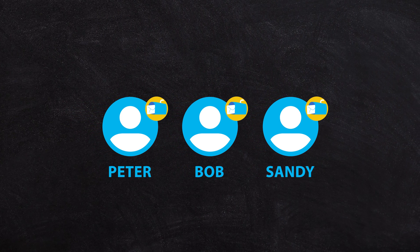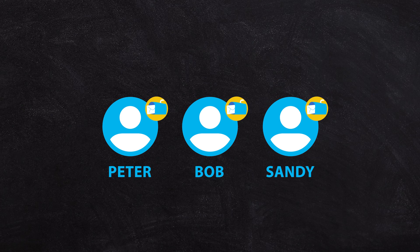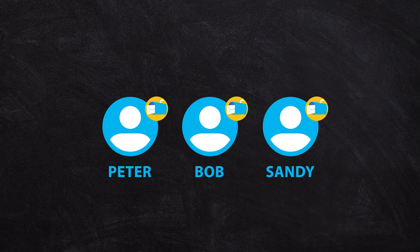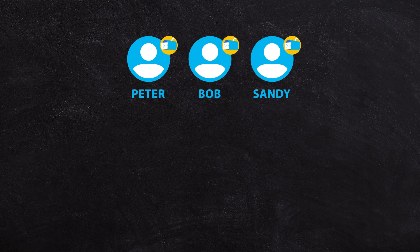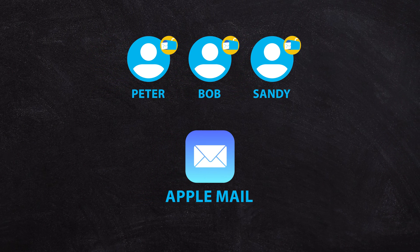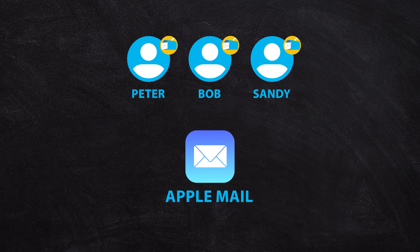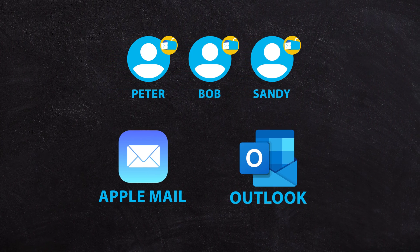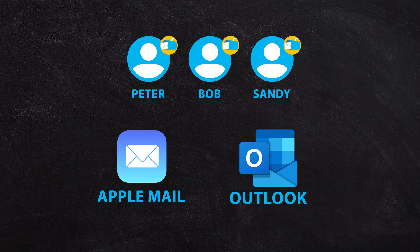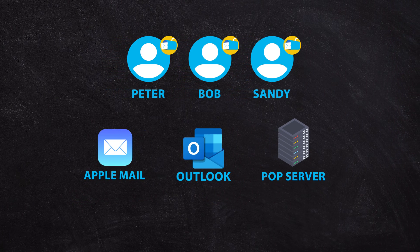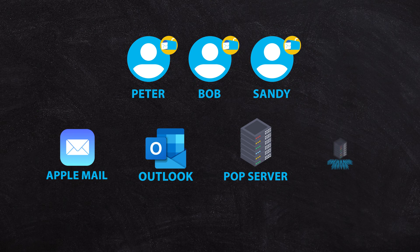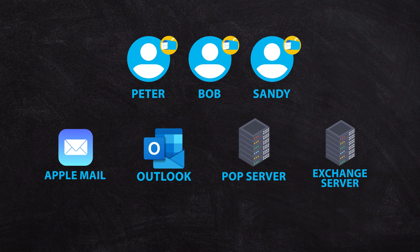You've got three mailboxes here, but you're probably going to have email scattered in other places. For example, you've got your Apple Mail over here, maybe some email is sitting in Outlook, maybe some is sitting on a POP server.